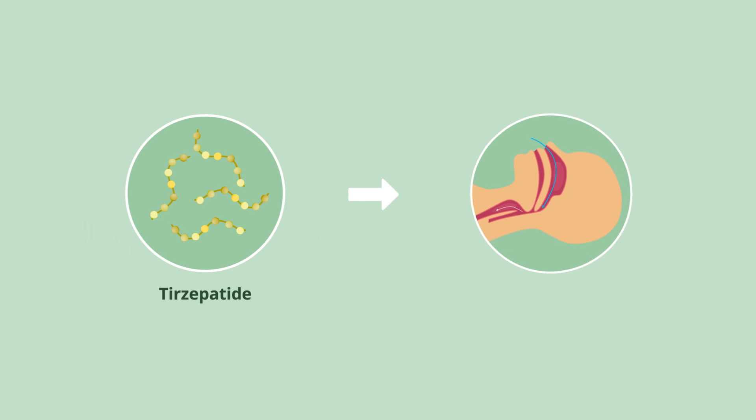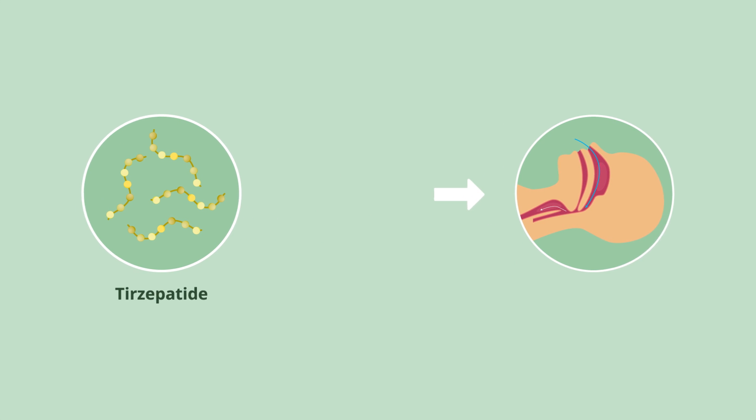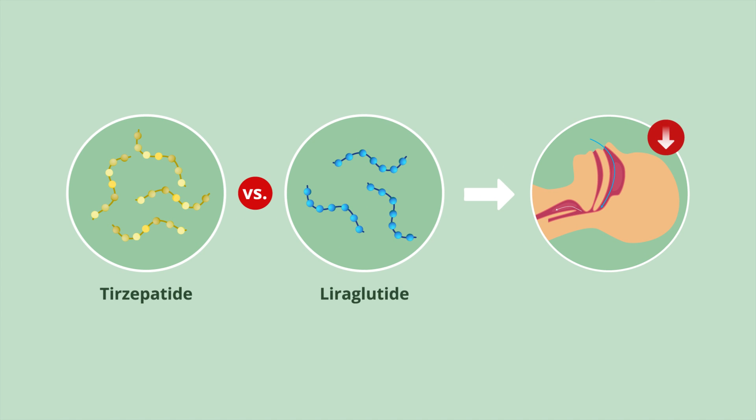Trisepatide showed that it was better than loraglutide in reducing OSA. Trisepatide did not show superiority when compared to semaglutide.